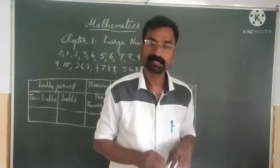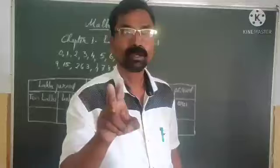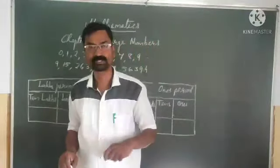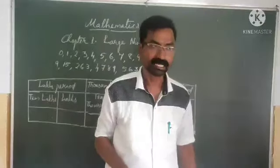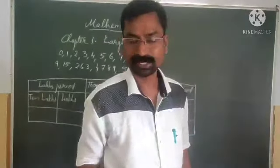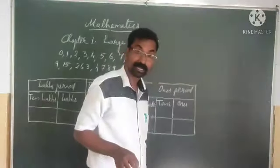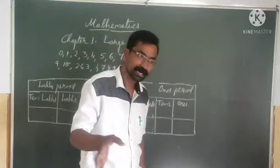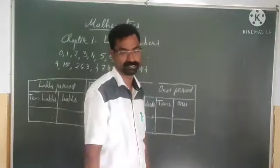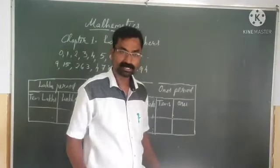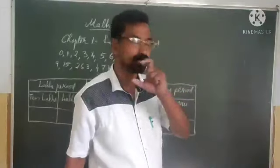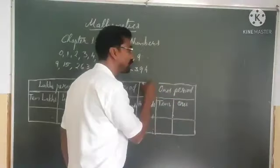In the world, there are two kinds of place value systems provided. One is international place value system. Another one is Indian place value system. In both the systems, numbers are reading in different ways. First, know about Indian place value system.